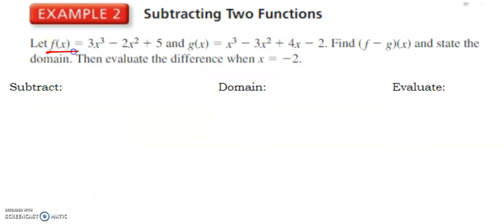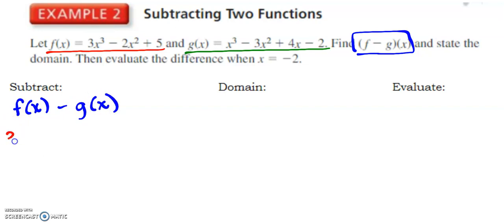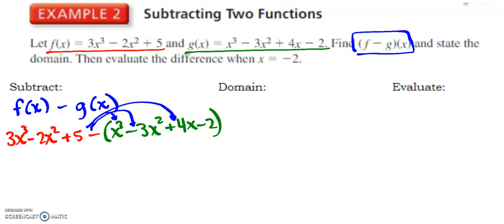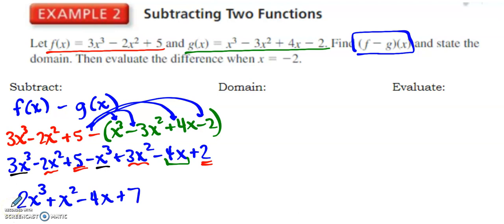All right, so subtracting. Here we have f(x) and g(x). If you're a color coding note taker, you might want to color code a little bit. First find f - g. Well, f - g is the same thing as f(x) - g(x). So I'm going to take f(x) - g(x). Notice I kept parentheses because I want to then distribute this negative sign to all of these. So go ahead and pause for a second and see if you can clean up that subtraction. All right, so I came up with 2x³ + x² - 4x + 7.